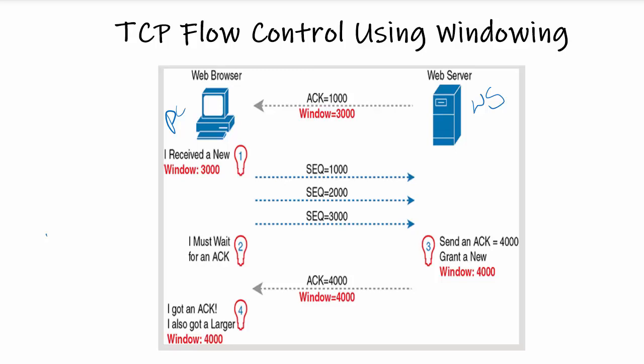The server tells the PC that it expects a segment with sequence number 1000. The window field is set to 3000, meaning the PC understands it can only send 3000 bytes and must stop and wait for an acknowledgement after sending 3000 bytes of TCP segments. Let us assume this PC has already sent four TCP segments of 1000 bytes each — segments one, two, three, and four.